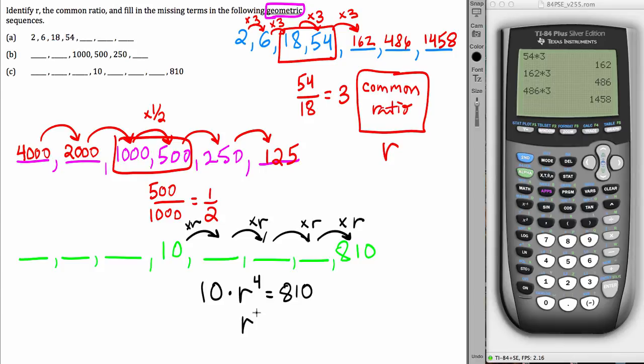Now, solving for r, immediately r to the 4th is 810 over 10, or 81, which means r to the 4th equals 81. Now, there are actually four solutions to this equation, but we're going to go with the easiest one. r equals 3.